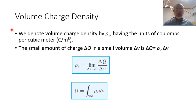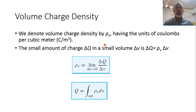Until now we have been talking about point charges. Now we consider volume charge density. In volume charge density, we don't have just a single charge — we have a distribution of charges distributed along a volume. Instead of talking about the value of the charge at a specific point, we talk about the charge density in this volume. We denote volume charge density by the symbol ρv, and its units are coulombs per meter cubed.